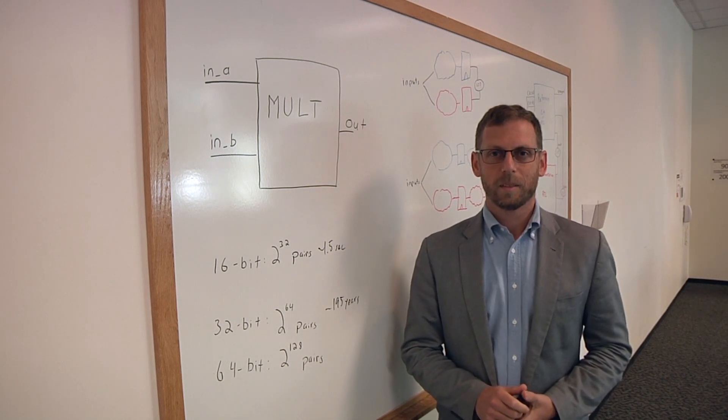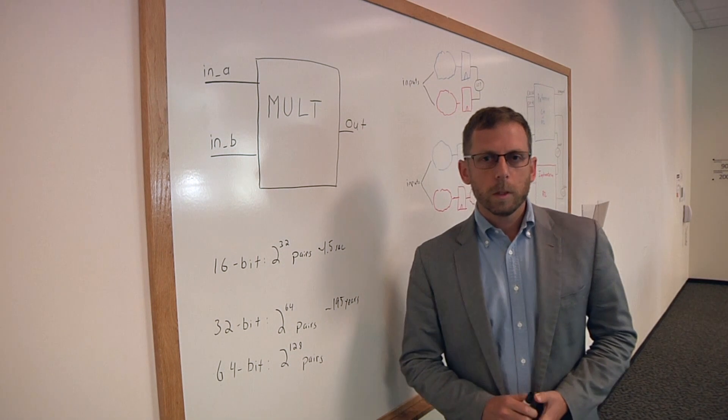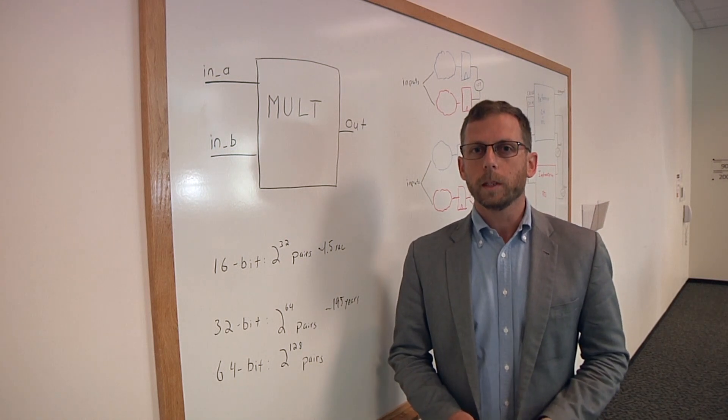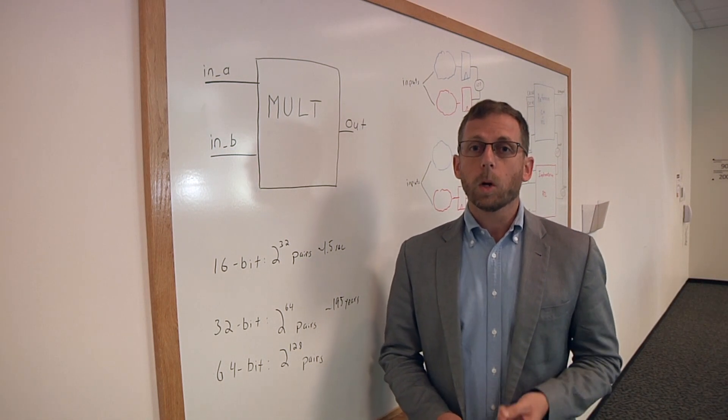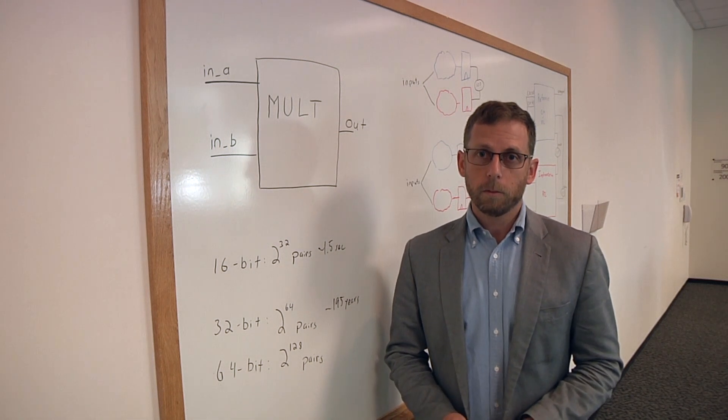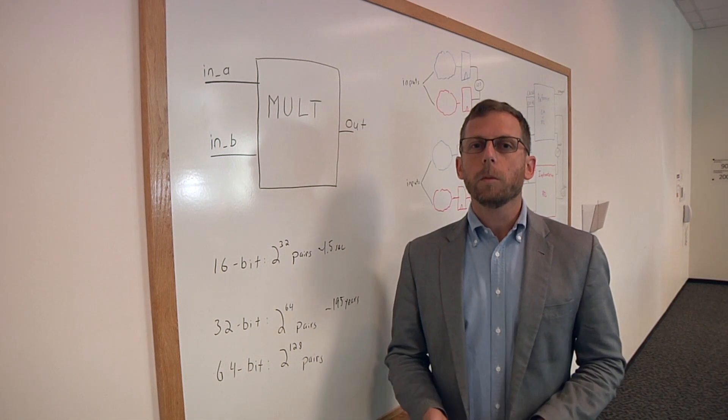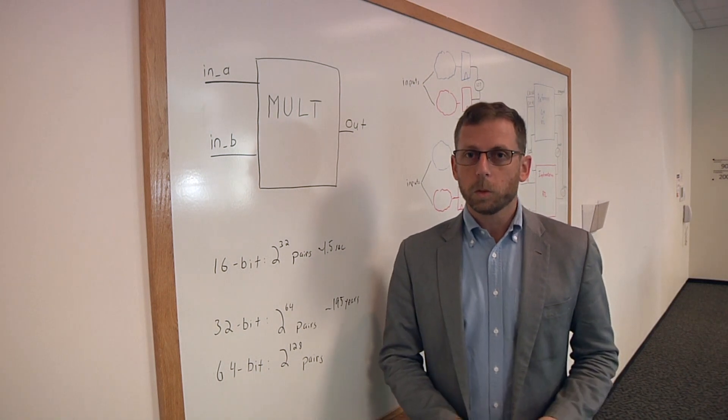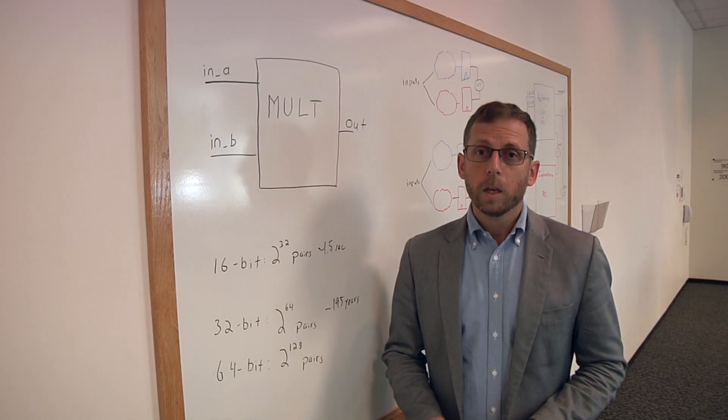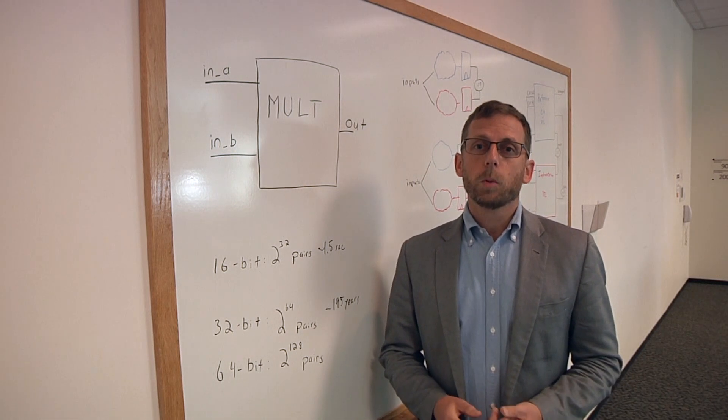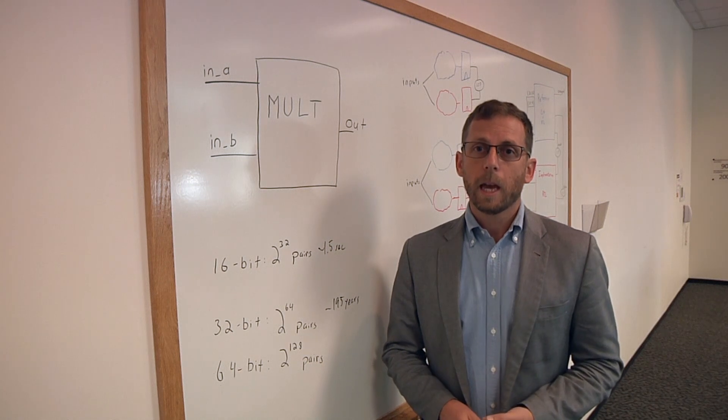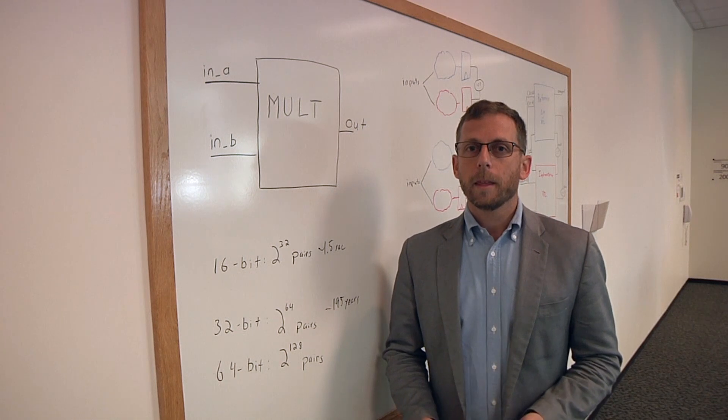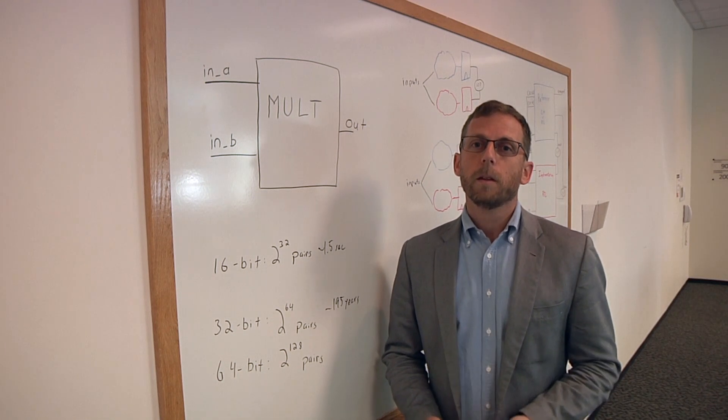So how do you do this in formal versus other types of verification? When we talk about formal verification, there are two classes of tools that we look at. One is the property verification or model checking style of tool, which is historically what's been used for our control path verification. Another kind of formal tool that we look at is an equivalence checking tool, which its goal is to try to prove that two different representations of a design actually perform the same function. And it's this kind of equivalence checking tool that is particularly useful for data path problems.